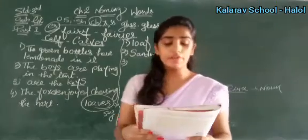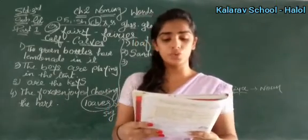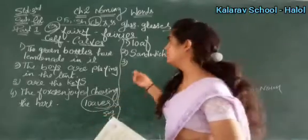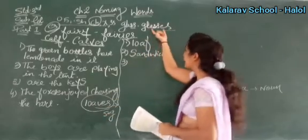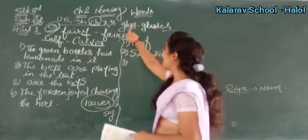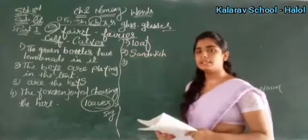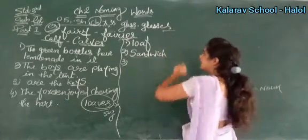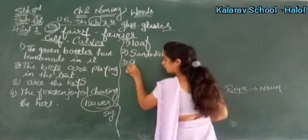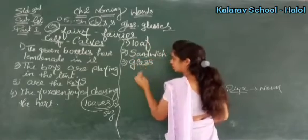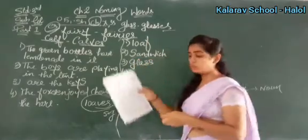Next: 'There were glasses for the juice.' Glasses — SS se end hota hai, ES lagaya. Singular: glass. Next: red berries and mangoes. Berries — B-E-R-R-Y — Y se pehle consonant aaya, toh IES: berries. Singular mein sirf I, ES nikalke Y lagao: berry.